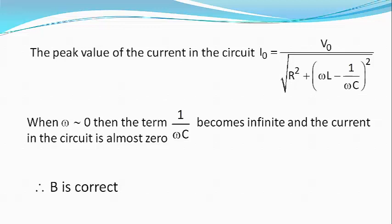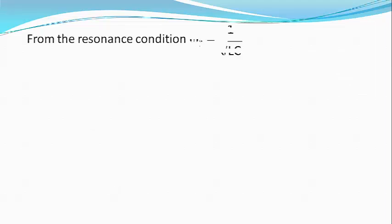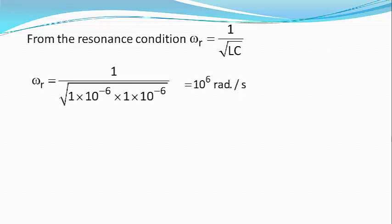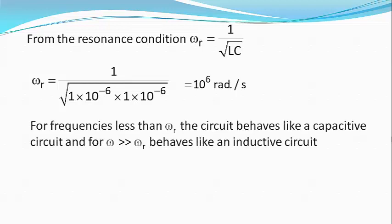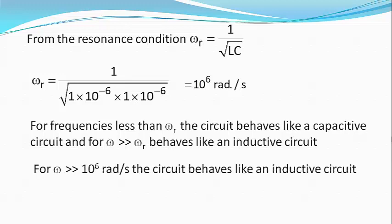From the resonance condition omega r equals 1 by root of LC, we get omega r equals 10 raised to power 6 radians per second. For frequencies less less than omega r, the circuit behaves like a capacitor, whereas for frequencies greater greater than omega r, it behaves like an inductive circuit. Now, for frequency greater greater than 10 raised to power 6, the circuit will behave like an inductive circuit and hence option C is not correct.